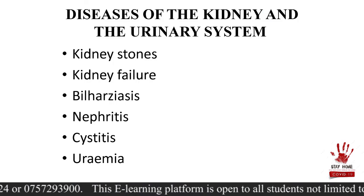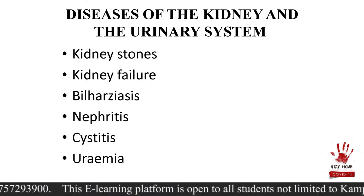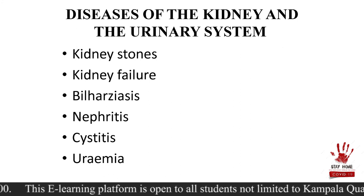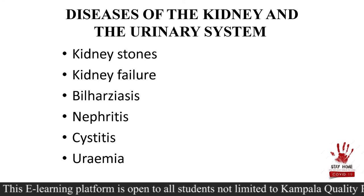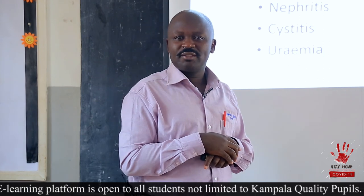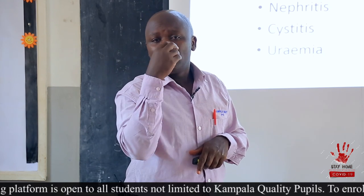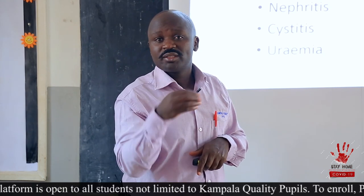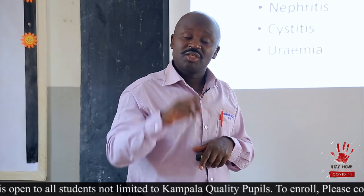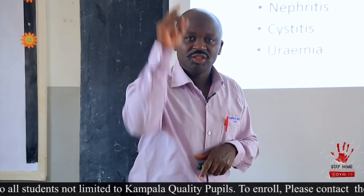When you have kidney failure, the kidney will fail to perform its functions — its function of filtering blood, and its function of controlling the amount of water, sugar, or salts in the body. When you have kidney failure, your kidneys will fail to perform their duties.